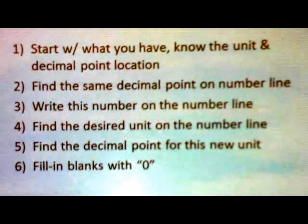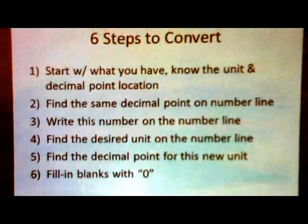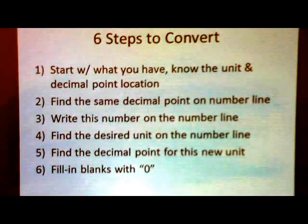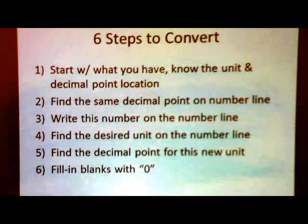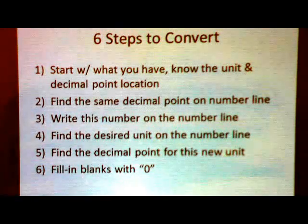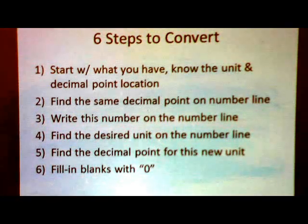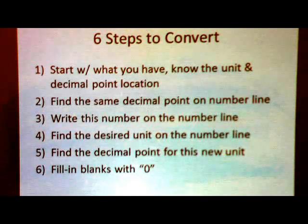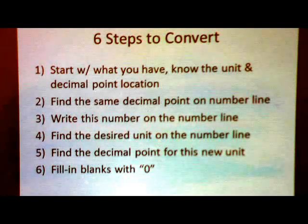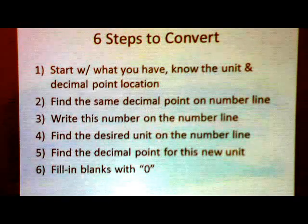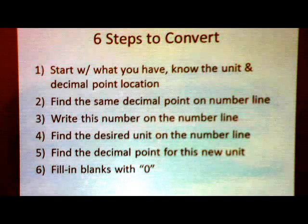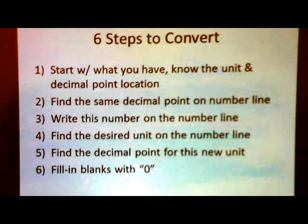Let's review the six steps before we start on the problem. Step one: know what you have — know where your starting unit is and where the decimal point is. Step two: draw your number line and find that same decimal point on it. Step three: transfer the number you've been given onto the number line. Step four: find where you are going — know the new unit on the number line. Step five: find the new decimal point for that unit. Step six: fill in the blanks in between with zero.